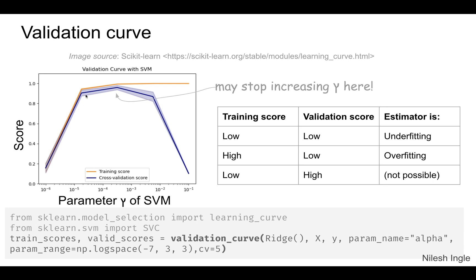However, beyond a certain value of gamma, the validation score starts to drop. That tells us we need to be somewhere in that region to get as high a score as possible on the validation set.